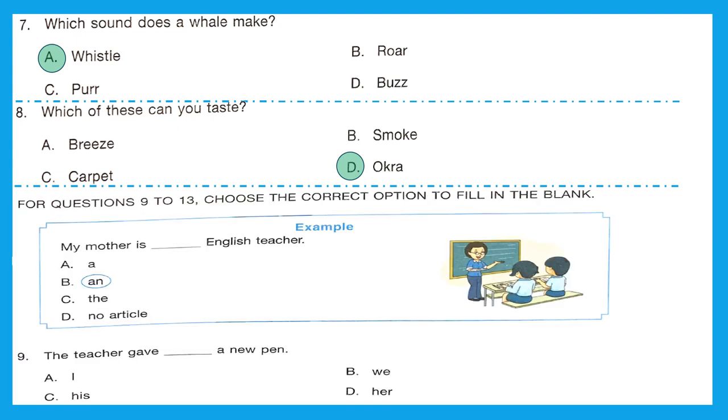For questions 9 to 13, choose the correct option to fill in the blank. Question 9, the teacher gave dash a new pen. What could it be? I, we, his or her? The right pronoun should be her. The teacher gave her a new pen.